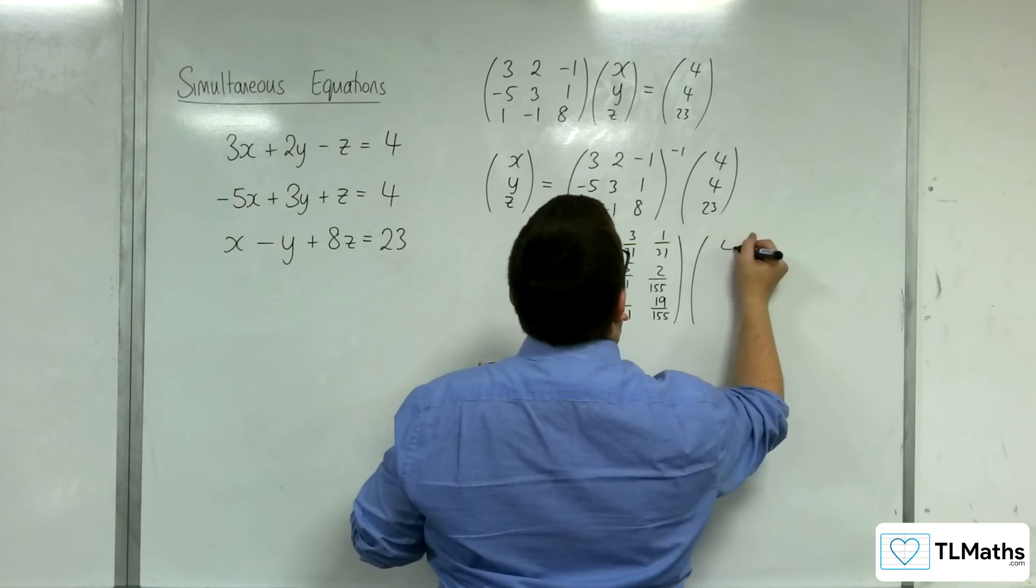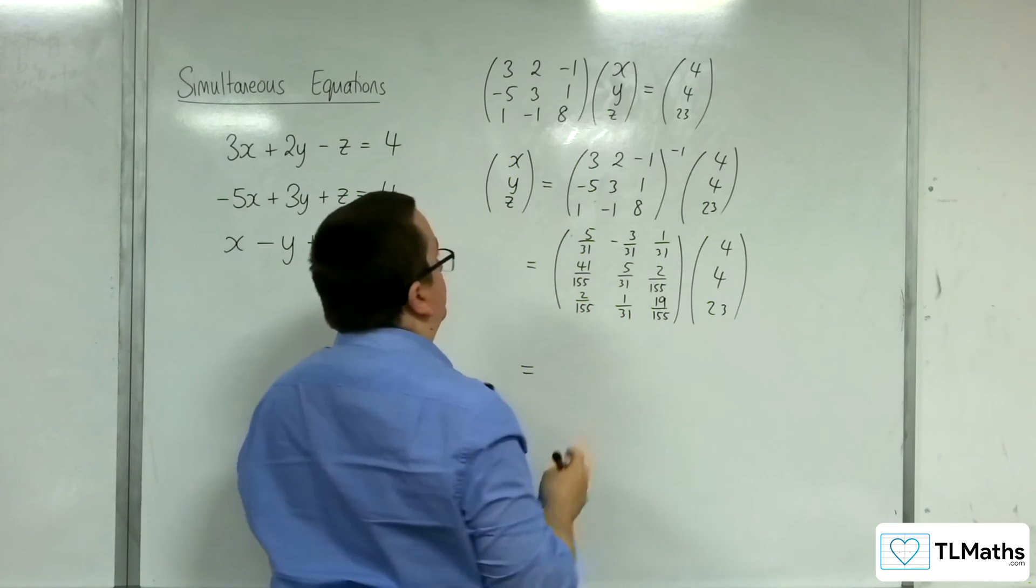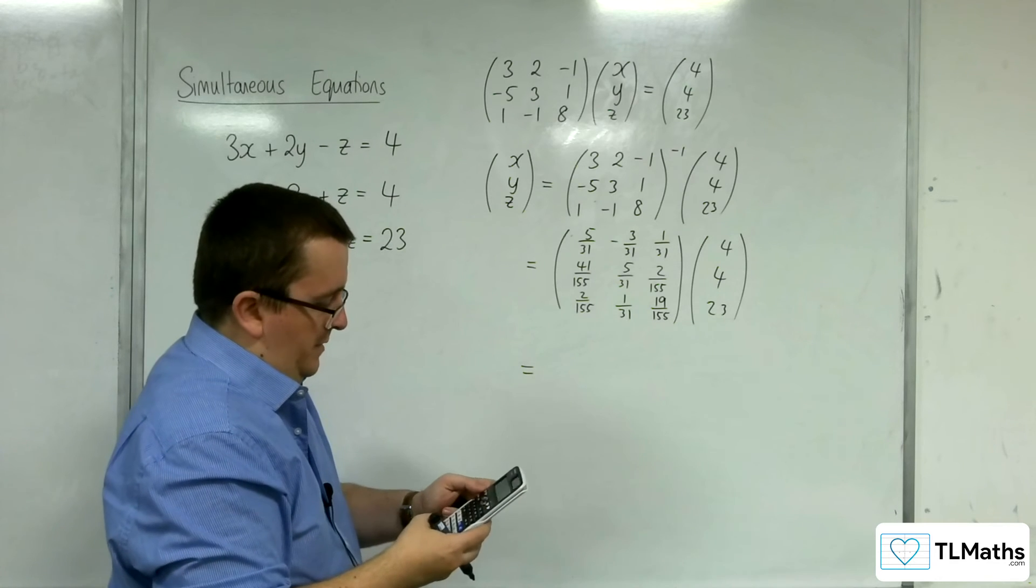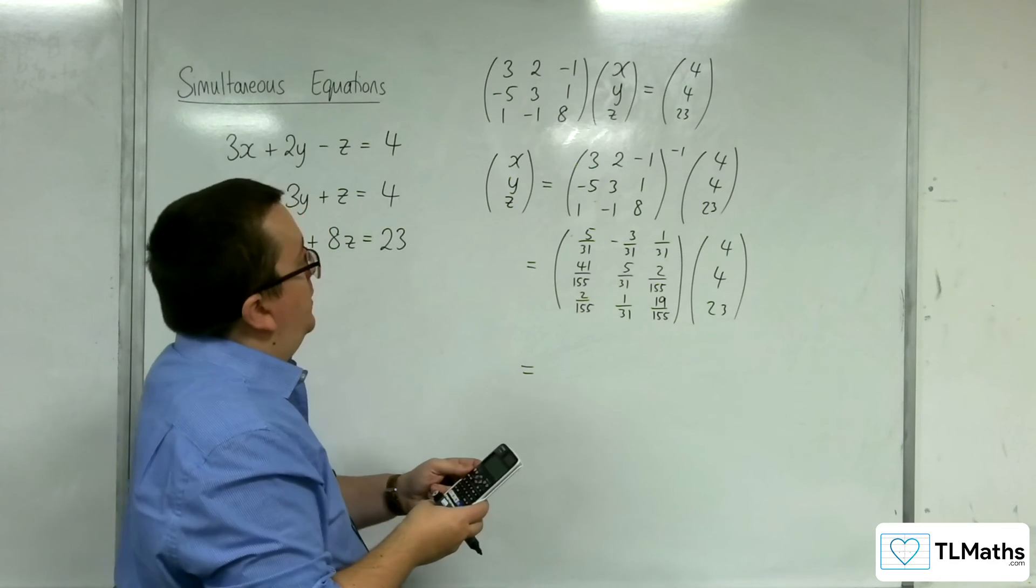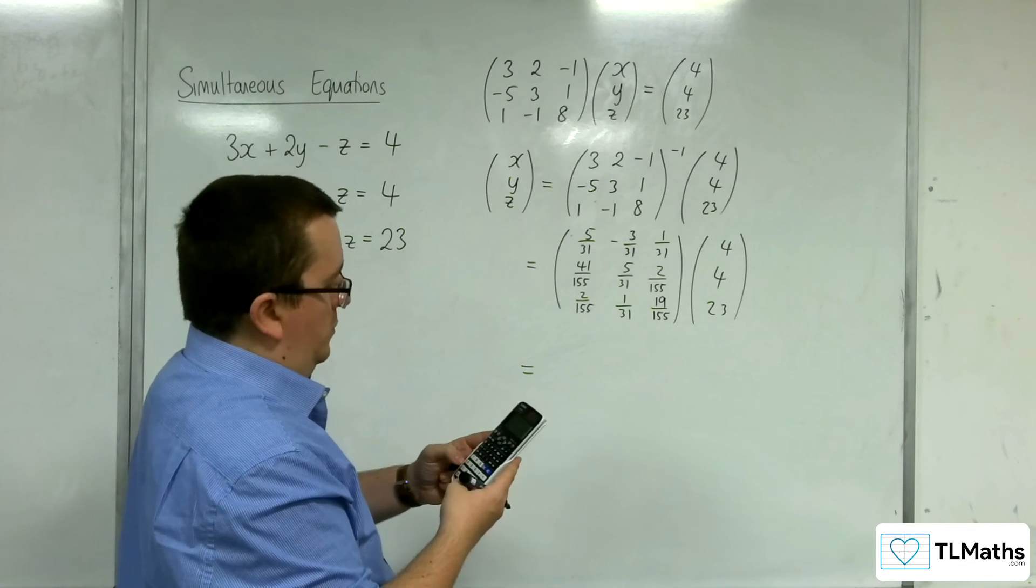And that is multiplying with 4, 4, 23. OK. So, let's define matrix number 2. So, this one's got three rows, one column, and it's just the 4, 4, 23.